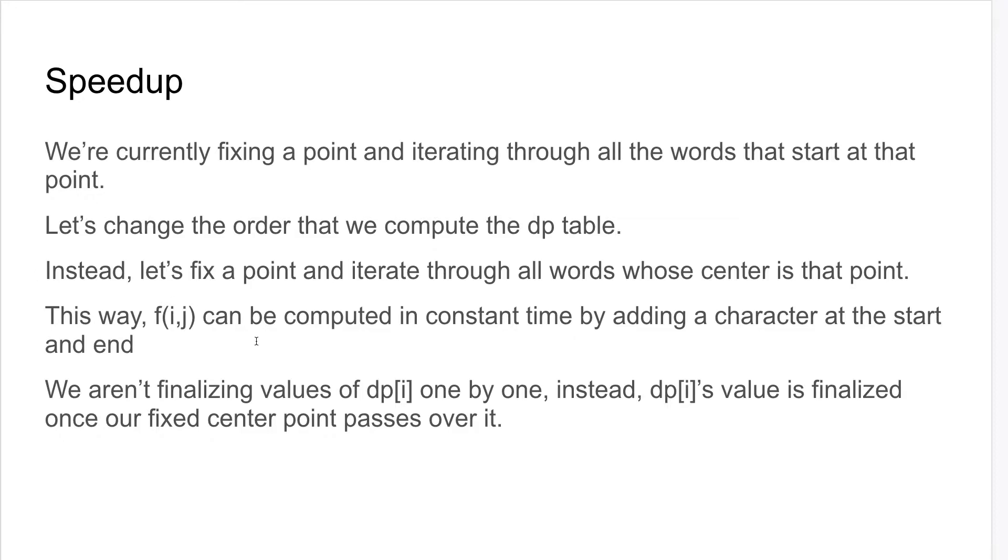Right now we're fixing the start point and iterating through all words that start at that point. We're kind of finalizing the DP values one by one from right to left. So instead, let's change the order that we compute the DP table. Instead of fixing the start point, let's instead fix the center point of the word that we want to add to the katek.